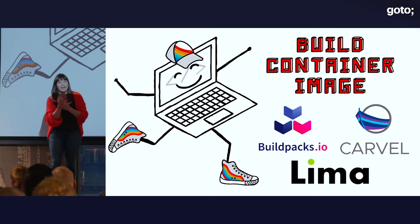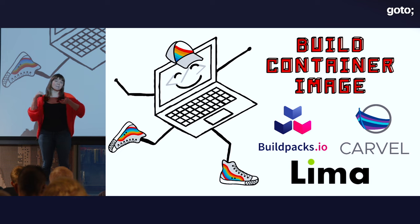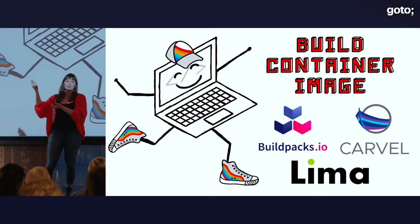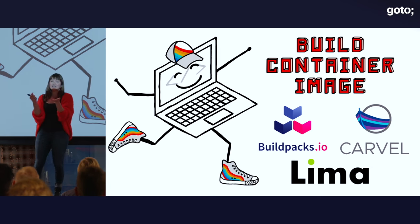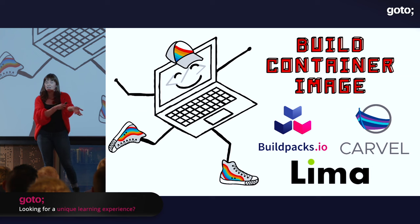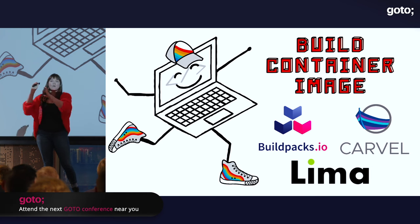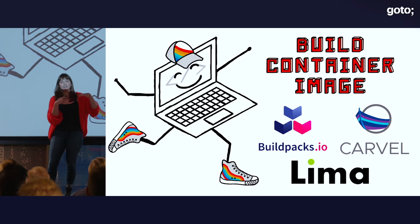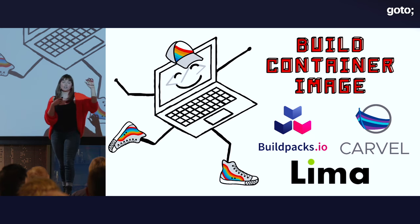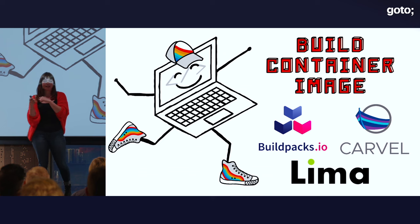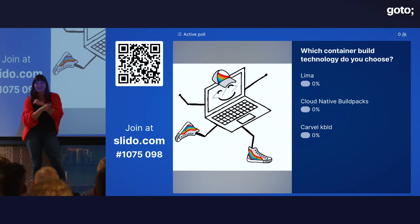Finally, we have Carvel kpack. With Carvel kpack, you have your application configuration defined in YAML and you let kpack know where your source code is. kpack can use BuildKit, or Buildpacks, or other container build technologies. When you run the kpack command, it not only builds the container image but also inserts it into your configuration — it tags it and puts it in the configuration, so you can be sure whatever you're running is the latest version of your source code. Those are our three options. Please vote.